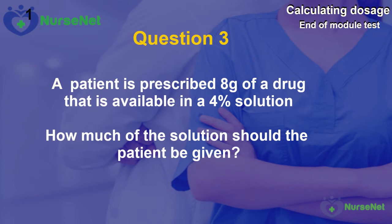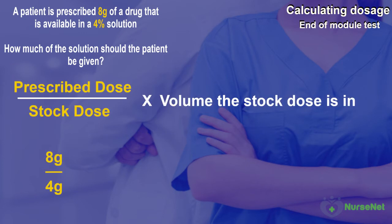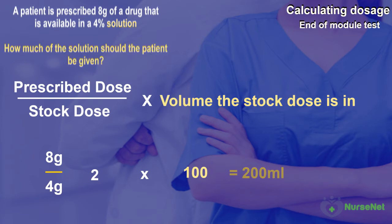Question 3. A patient is prescribed 8g of a drug that is available in a 4% solution. How much of the solution should the patient be given? We need to identify that the drug is available in a 4% solution, or in other words a stock dose of 4g for every 100ml of solution. So now we can put this into our basic dose formula: a prescribed dose of 8g divided by a stock dose of 4g gives us 2. 2 multiplied by the volume the stock dose is in, which is 100ml, gives us our answer of 200ml.